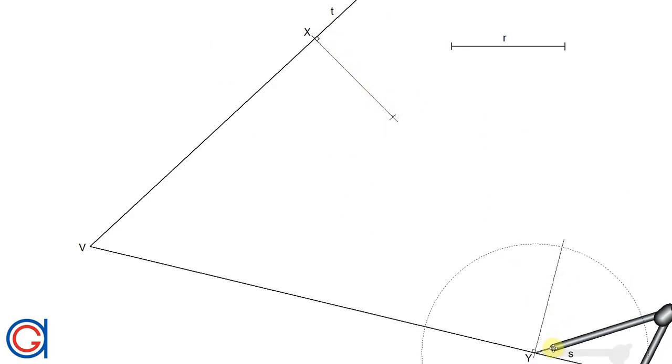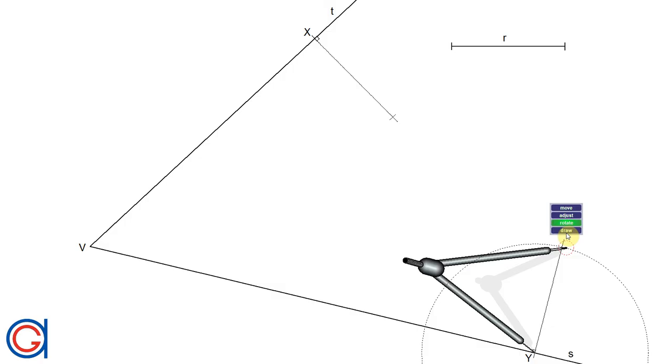And now we are going to repeat this process with the same radius, setting our compass on point Y. We scribe another arc to get a new point.